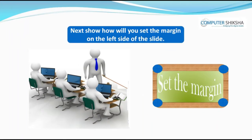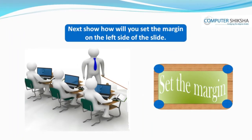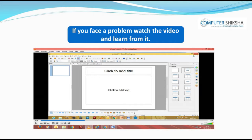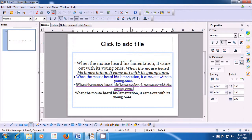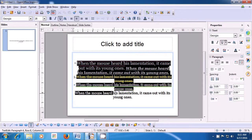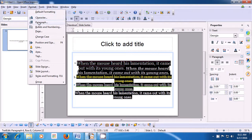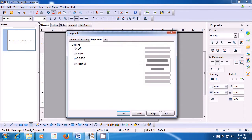Next, show how you will set the margin on the left side of the slide. If you face a problem, watch the video and learn from it. Let us now see how we apply space before and after the text on our slide. To do so, first select the paragraph on the slide where you need to apply the space. After selecting, take your pointer to the Format menu of the menu bar, left-click, and then click on the Paragraph option. A box opens — click on the Indents and Spacing option.